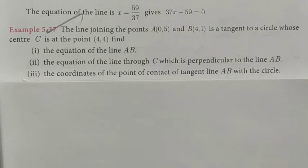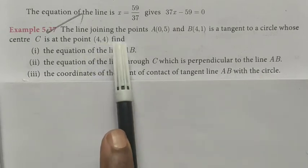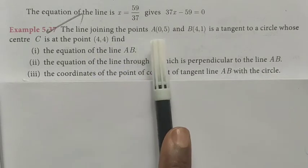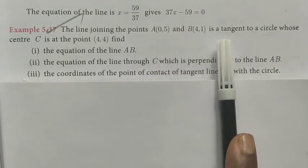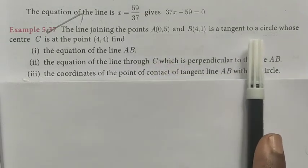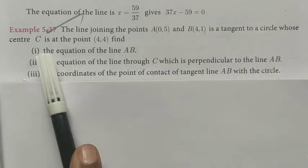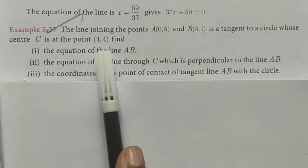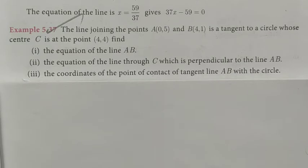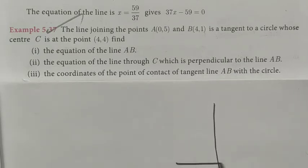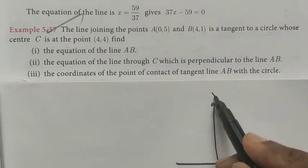Hi students, class 10 example sum 5.37. The line joining the point A(0,5) and B(4,1) is tangent to the circle whose center C is at the point (4,4). Find the equation of the line AB. Let me draw the diagram on a graph.